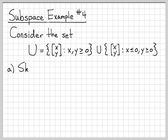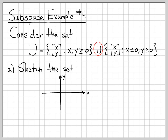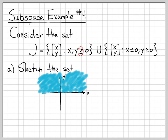Similar to last time, let's first visualize what this collection of points looks like. We'll sketch the 2D plane and shade in all of the points that are either in the first set or the second set — we're unioning these two things together to form the set U. If we sketch in all points where both x and y are greater than zero, that's the first quadrant, and then where x is less than zero but y is greater than zero, we get the second quadrant. These are inclusive inequalities, so it includes the x-axis line as well.